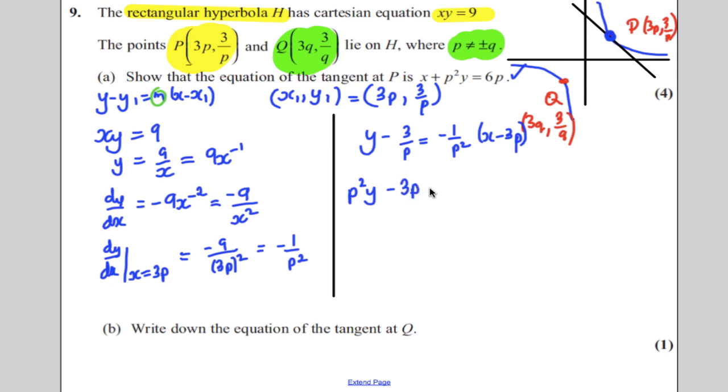3p²/p, which is just subtract 3p, is equal to negative, and then we're going to -(x - 3p). Then we're going to just expand that bracket, so that would be -x + 3p.